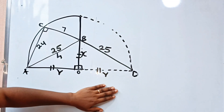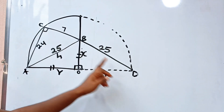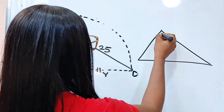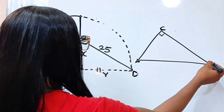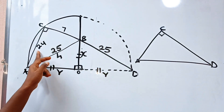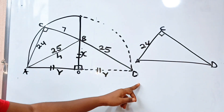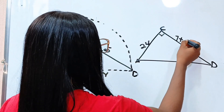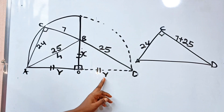Now let us consider triangle ACD. AC is 24, and CD is 7 plus 25, which equals 32. AD is R plus R, which equals 2R.